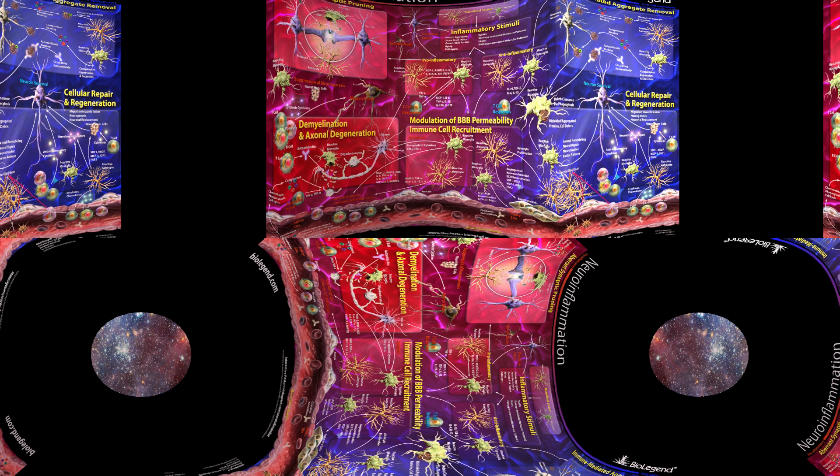Welcome to BioLegend's Neuroinflammation Pathways Poster in 360 Degrees. Neuroinflammation refers to the inflammation of the nervous tissue and occurs as a response to a variety of inflammatory signals such as trauma, infection, aging, and genetic risk factors.